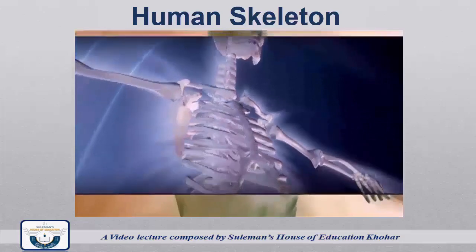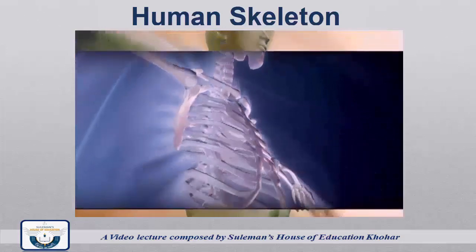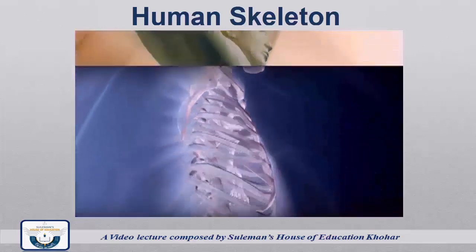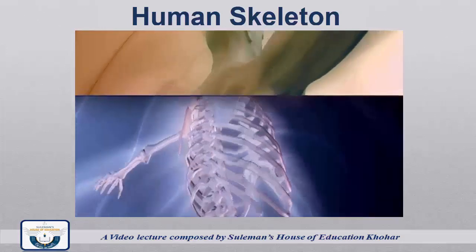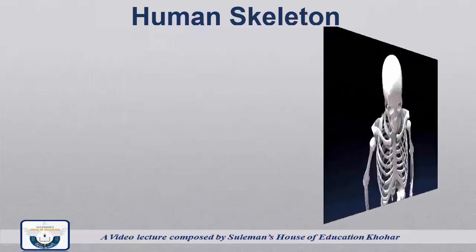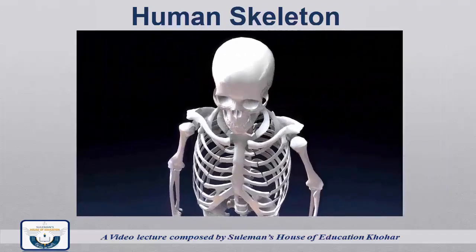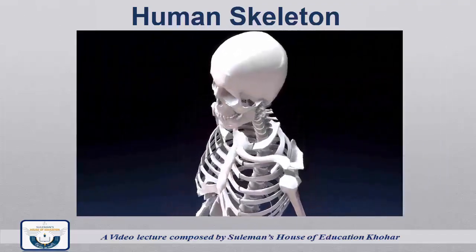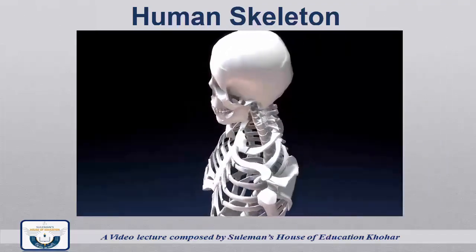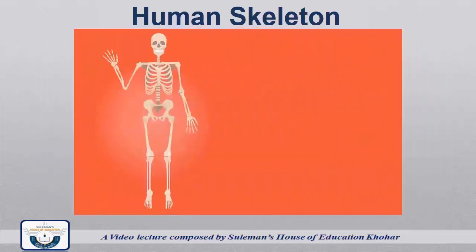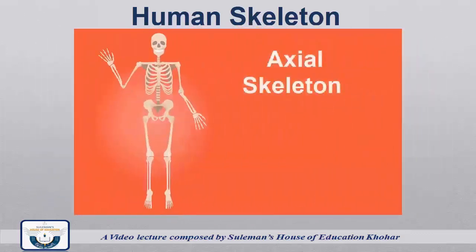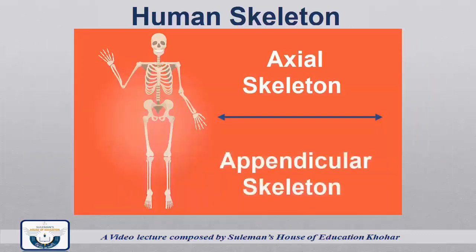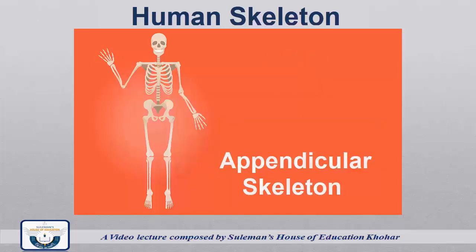Human skeleton can be visualized by exposing it with X-rays. An adult human skeleton consists of 206 bones. It can be grouped into two: axial skeleton and appendicular skeleton.